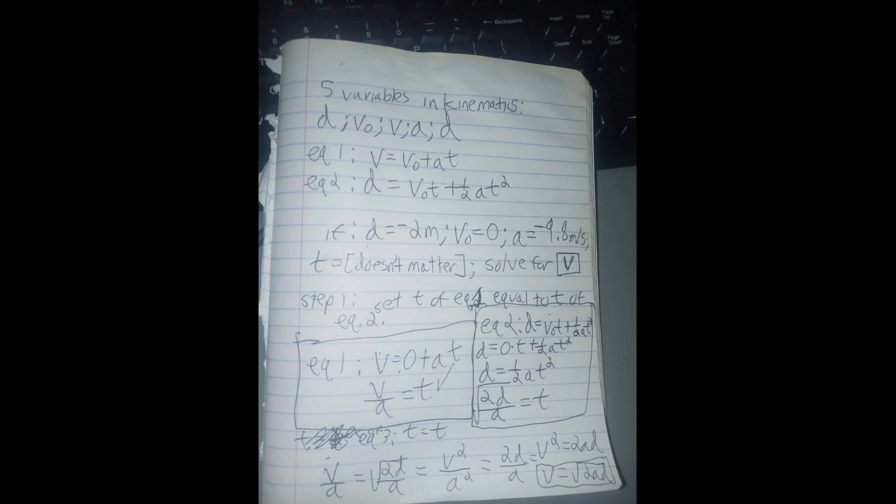To basically find a way to find an answer to the question that was asked before. If you have a ball that's 2 meters above the ground, you drop it on Earth, how fast will the ball be moving right before it hits the floor?